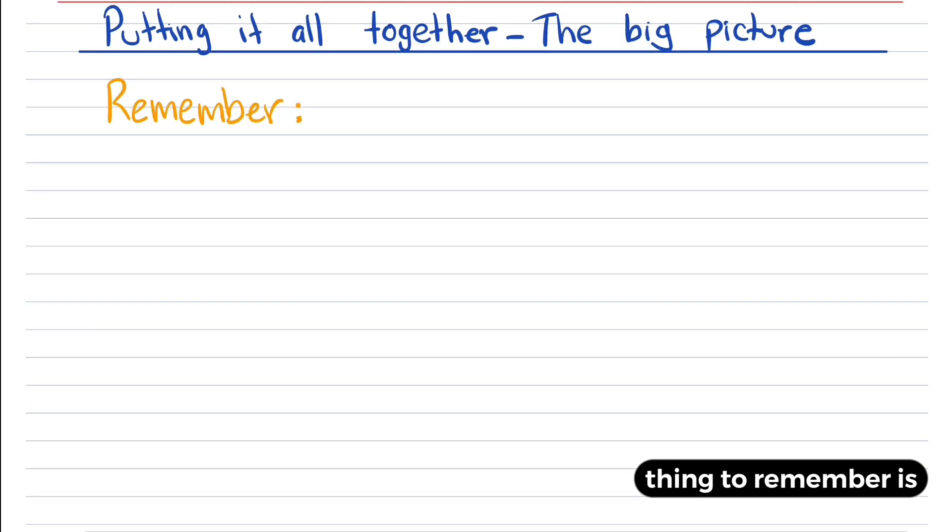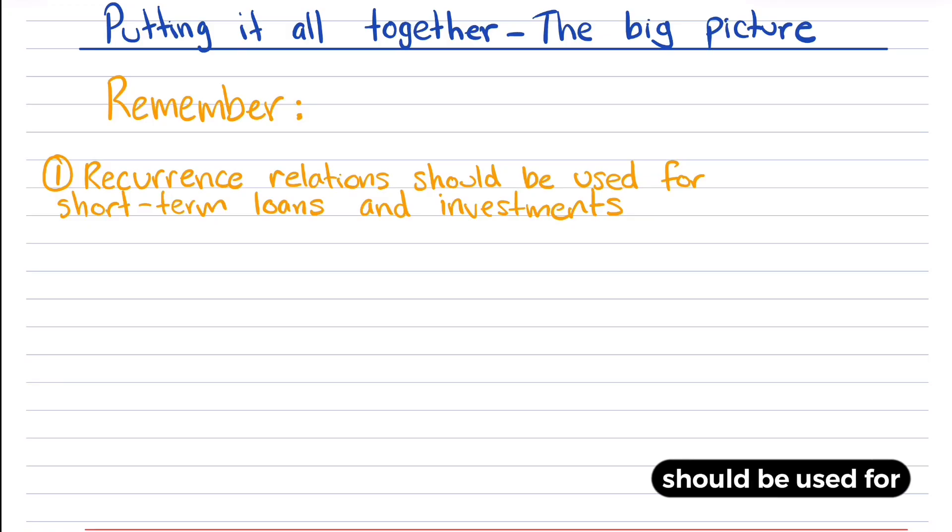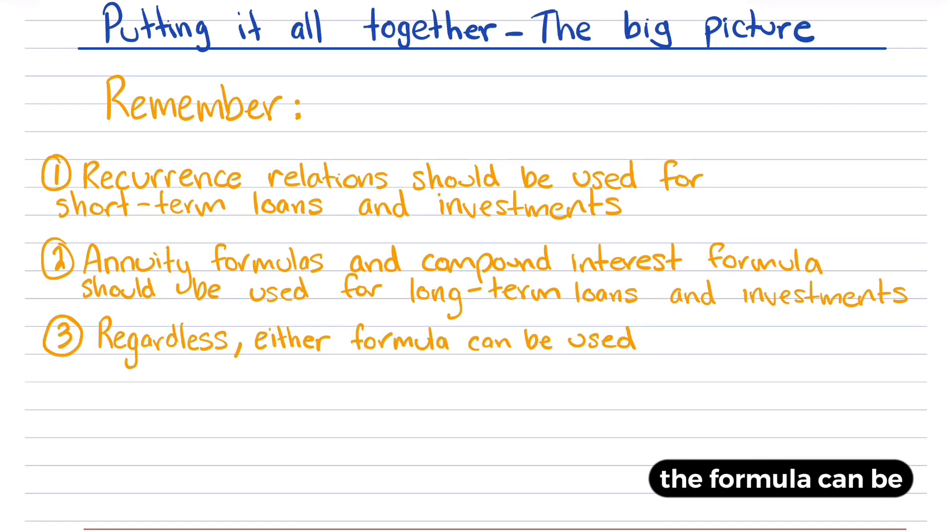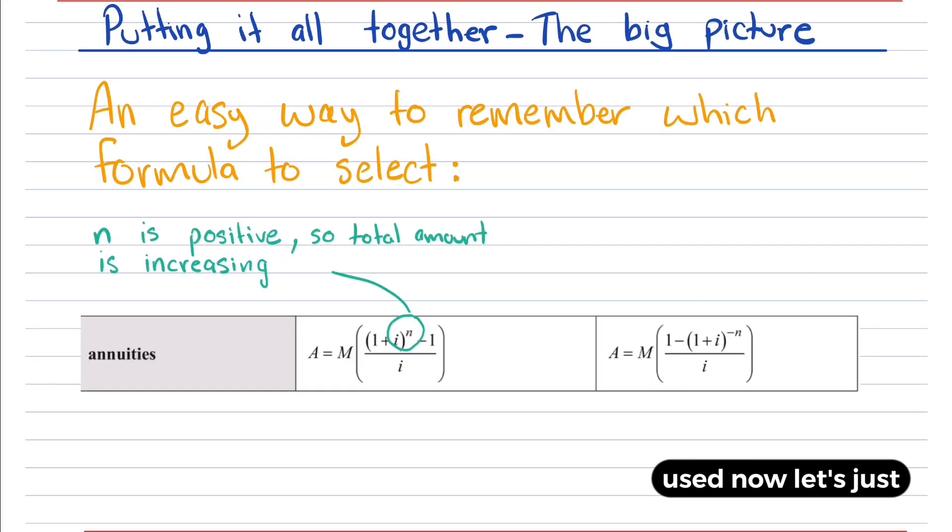So the main thing to remember is that recurrence relations should be used for short-term investments, annuity formulas and compound interest should be used for long-term investments, but regardless, either formula can be used. Now, let's just talk a little bit about the annuity formulas.